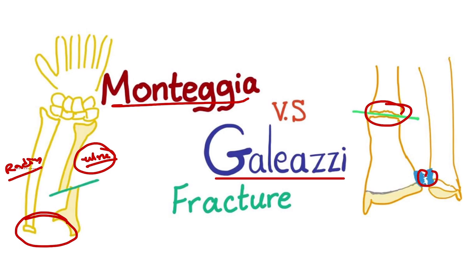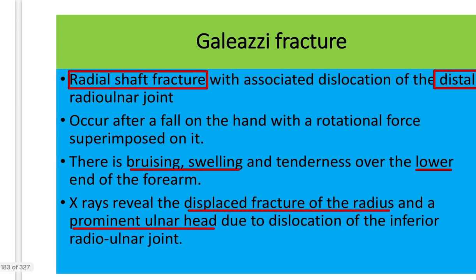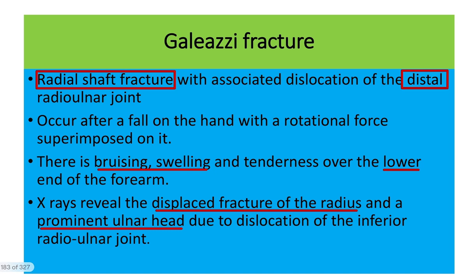To remember the key point: in the case of the ulna, the broad part is located proximally, so dislocation occurs proximally. In the case of the radius, the broad area is at the distal end near the wrist. Therefore, when there is a fracture of the radius, dislocation occurs at the distal radial joint. The Galeazzi fracture is a radial shaft fracture with distal radial joint dislocation.